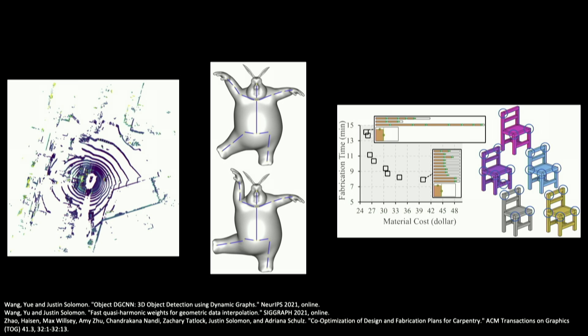Autonomous driving uses geometric reasoning to detect cars, pedestrians, cyclists, and obstacles on the road. Computer animation brings characters to life by bending and stretching the shapes of their bodies. And computer-aided design captures the geometry of objects that can be manufactured using 3D printers. These applications suggest a fundamental question.